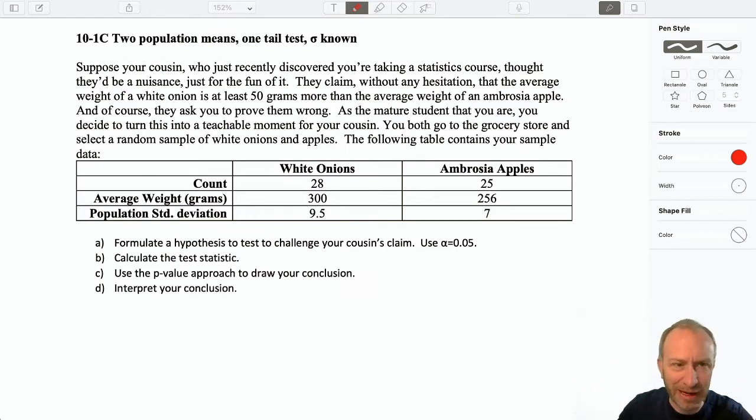This one's kind of silly. I just made this one up to try to illustrate a point. Suppose your cousin who recently discovered you're taking a statistics course thought they'd be a nuisance just for the fun of it. They claim without any hesitation that the average weight of an onion is at least 50 grams more than the average weight of an ambrosia apple. Happens to be my favorite apple. And of course they ask you to prove them wrong. As the mature student that you are, you decide to turn this into a teachable moment. You both go to the grocery store, take a random sample of onions, random sample of apples, ambrosia apples, and here's our data.